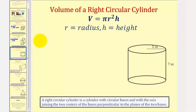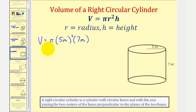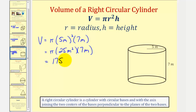The volume of our right circular cylinder is equal to pi — remember pi is an irrational constant — times R squared, which would be five meters squared, times the height, which is seven meters. So we'd have pi times five meters squared, which is 25 meters squared, times seven meters. Twenty-five times seven is 175, so we'd have 175 pi cubic meters. This is the exact volume of our right circular cylinder.